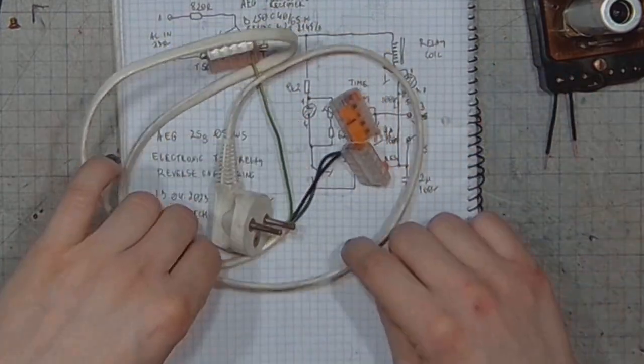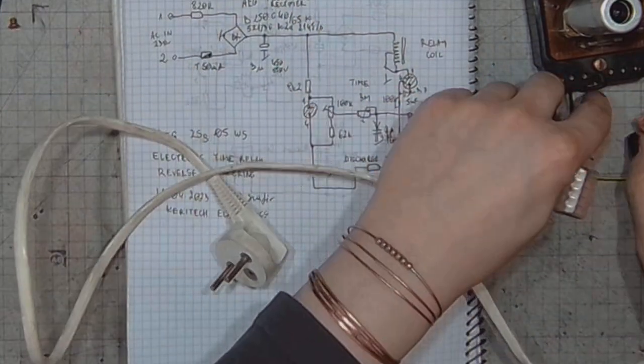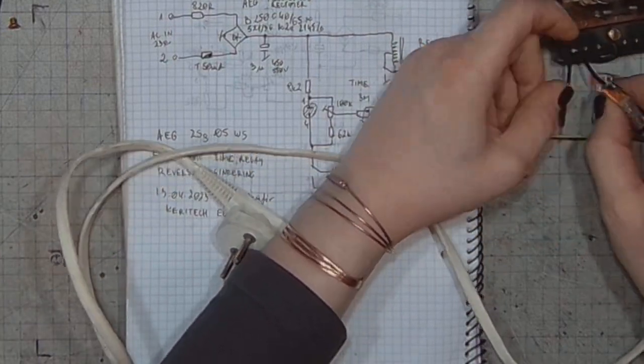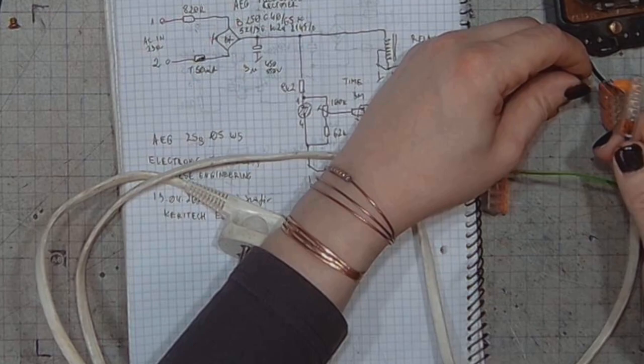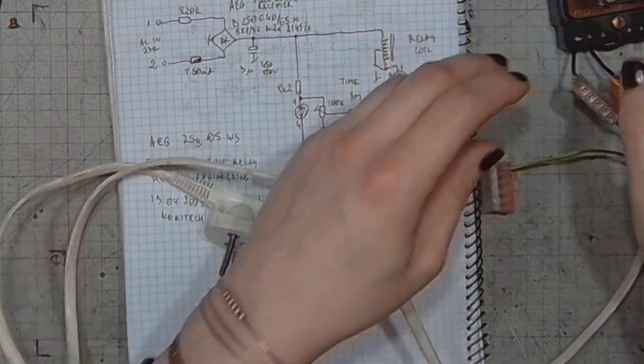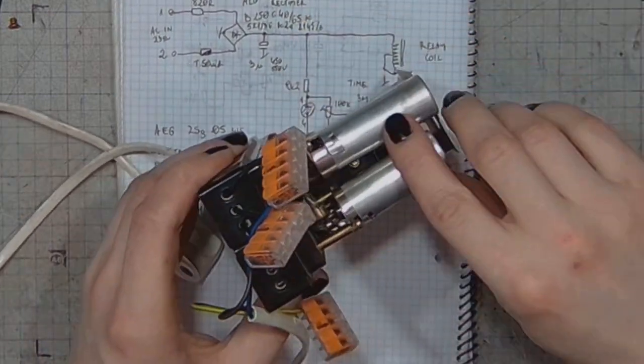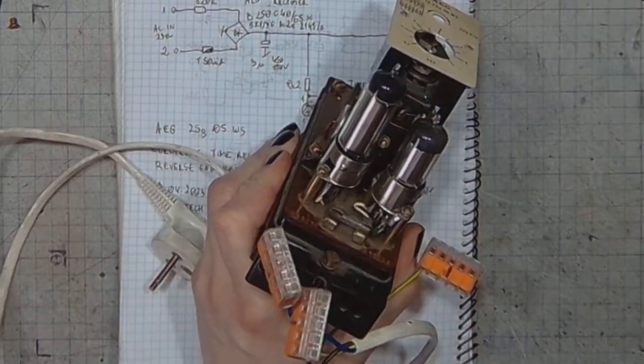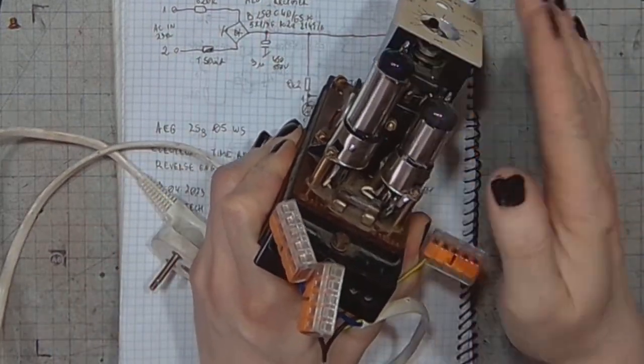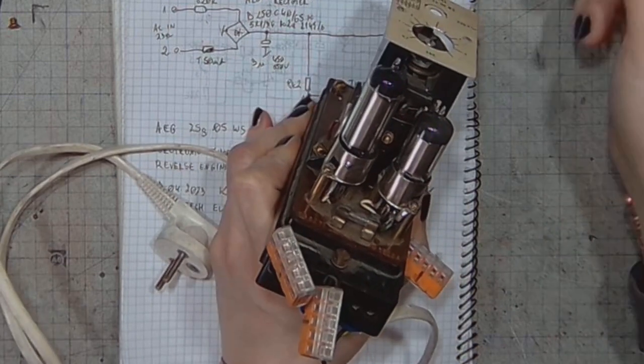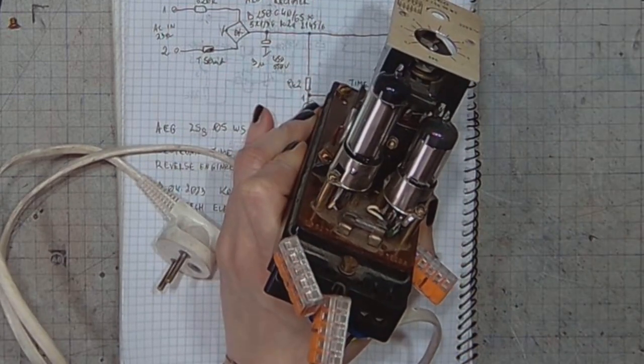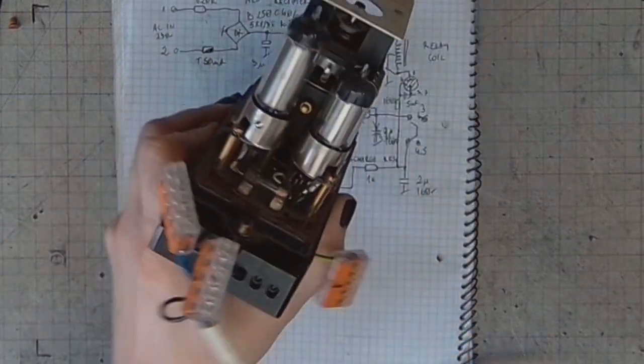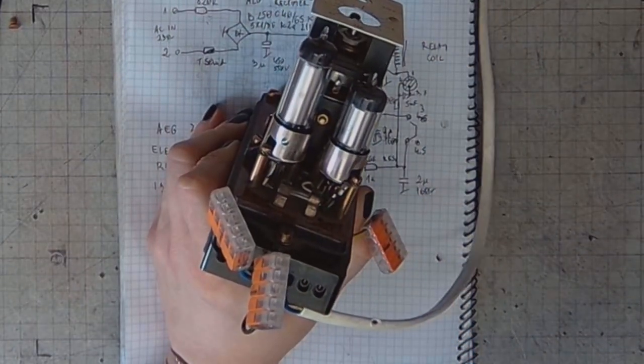So now it's time to connect the time relay and test it. I will take off the shield of the tubes and turn off the light.